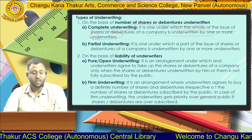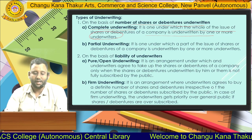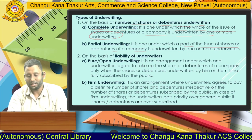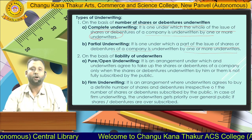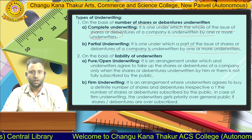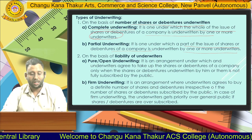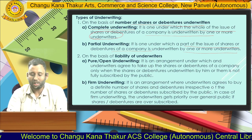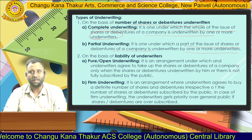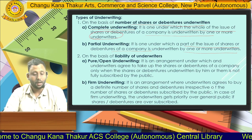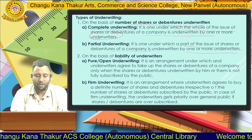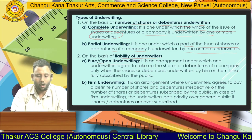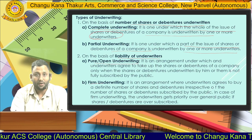Second is partial underwriting. Partial underwriting means a part of the issue of shares or debentures of a company is underwritten by one or more underwriters. So not all the shares are taken by the underwriters — partially it is taken by the underwriters and partially by the public.